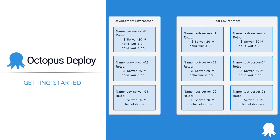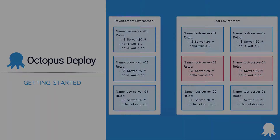In this diagram, each target has two or three roles assigned. When a deployment or runbook run occurs in Octopus Deploy, it will look for targets assigned to those roles for that specific environment. For example, a project referencing the role Hello World API will select Dev Server 01 and Dev Server 02 when deployed to the development environment. When the same release is deployed to the test environment, it will select Test Server 03 and Test Server 04, as those are the servers with the Hello World API role assigned to them.